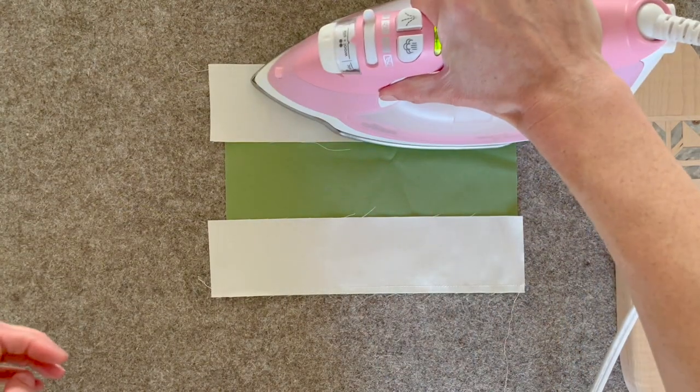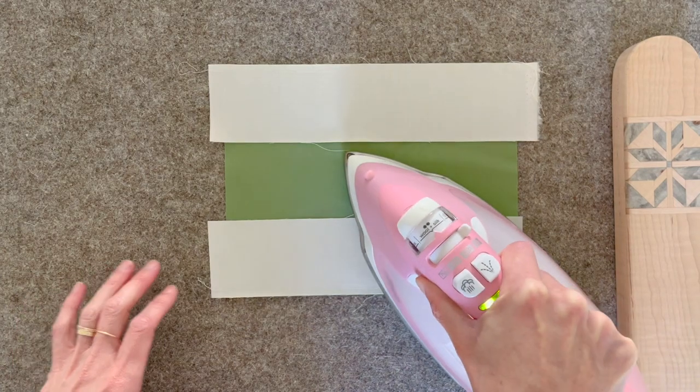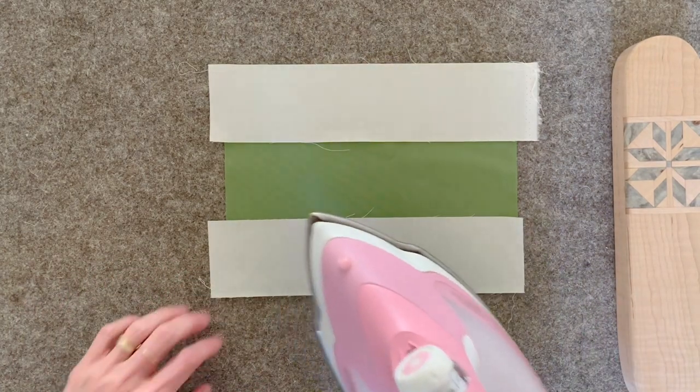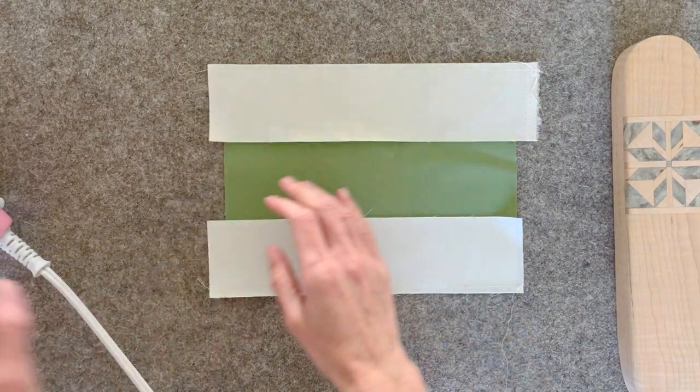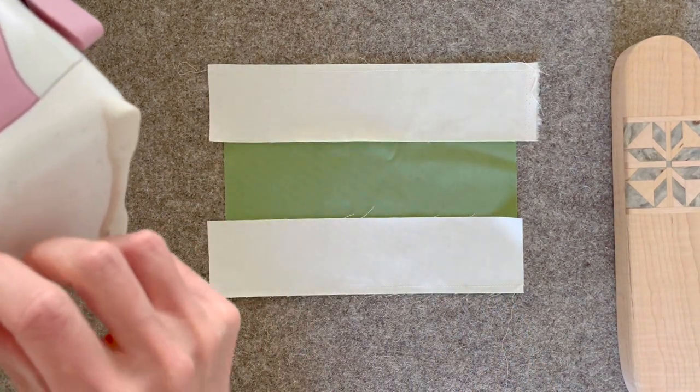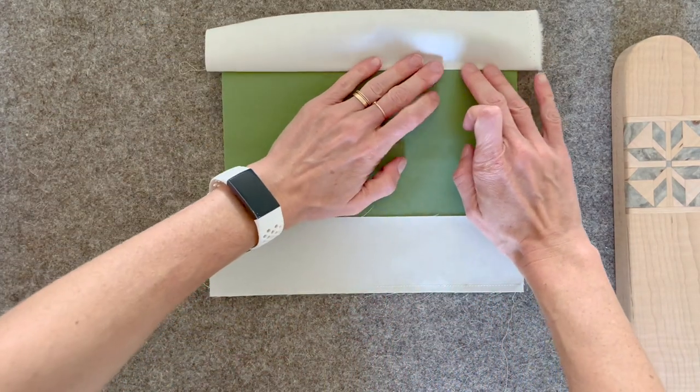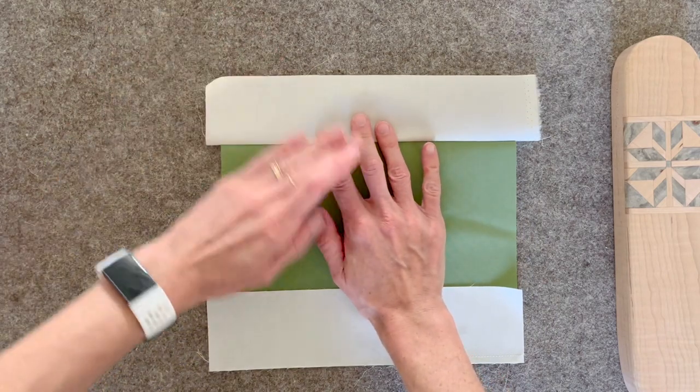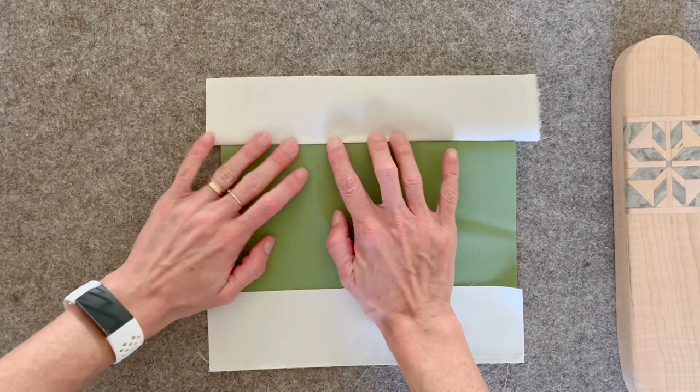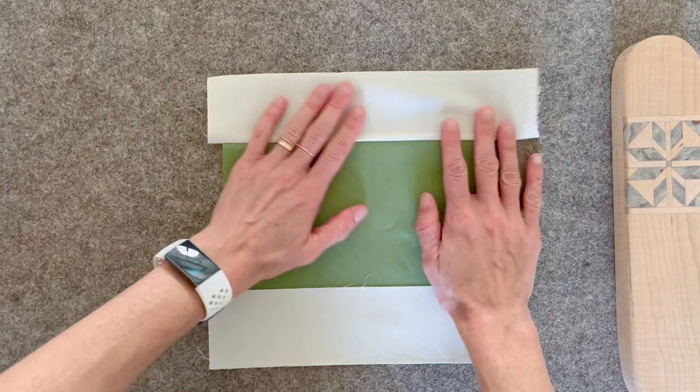So what I like to do is give it a press, and I'm actually literally just pressing down, and that's just called setting the seam. Next I finger press it open. I like to press it open just like this. I try my hardest not to stretch or distort that seam because I want it to be really nice and flat and I don't want it to be wavy.